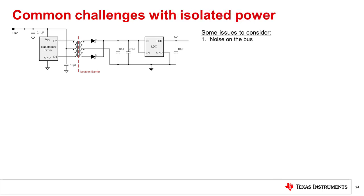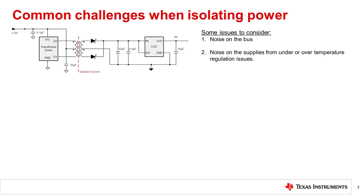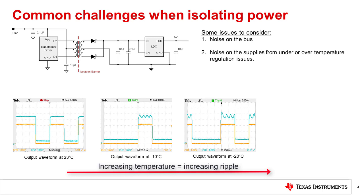If your isolated power solution will be used with an isolated interface, it is critical to keep a clean supply line from your secondary side power. Noise on the supply line will definitely show up on the bus. Noise on the supplies can result from under or over temperature regulation issues. Pay special attention to supply stability over temperature. This example shows ripple that may suddenly appear when operating under lower output currents over temperature.